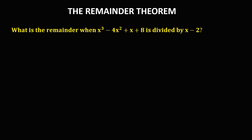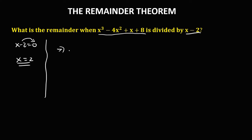For this next problem: what is the remainder when x to the power 3 minus 4x to the power 2 plus x plus 8 is divided by x minus 2? Using the remainder theorem, equate x minus 2 to 0, then transpose the negative 2, so x is equal to positive 2. Substitute x equals 2 into the equation: we have 2 to the power 3, minus 4 times 2 to the power 2, plus 2, plus 8.